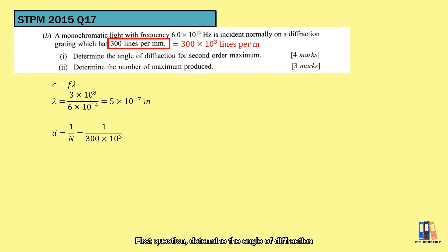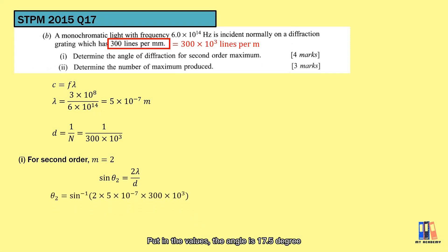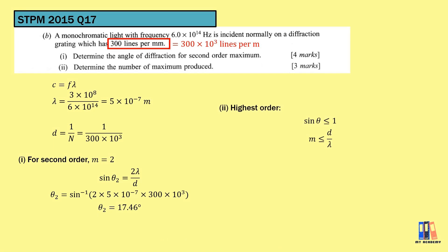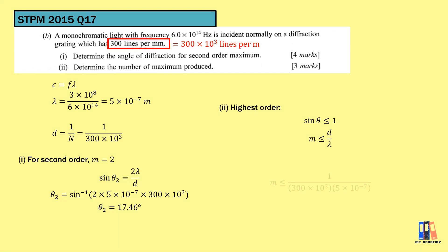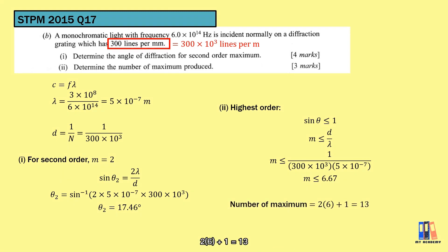First question: determine the angle of diffraction for the second order maximum. We apply the formula d sin θ = mλ, where m = 2. Substituting the values, the angle is 17.5 degrees. The next question is to obtain the number of maxima produced. The condition is that sin θ cannot be bigger than 1. Rearranging the formula, m is not more than d/λ. Substituting the values, the maximum value of m is 6. Hence, the number of maxima equals 2 × 6 + 1 = 13.